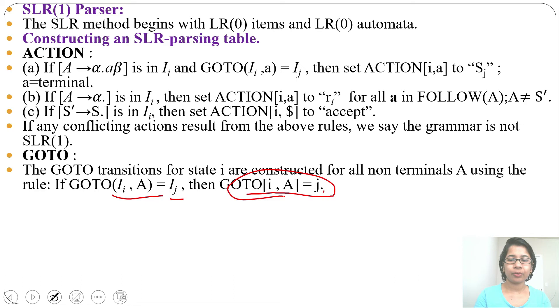In GOTO we'll write j. In ACTION we'll write Sj, and GOTO that will be with the non-terminals, whereas ACTION will be with the terminals. All the rules are same as LR(0) parsing table except this: we'll place reduction in FOLLOW of LHS side variable.